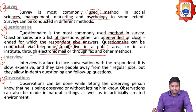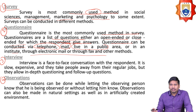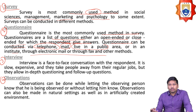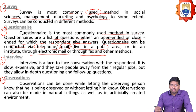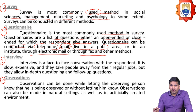Observations are also a primary data method, which can be conducted through experiments. This can be done by letting the observed person know they are being observed, or without letting them know. Observations can be made in several settings as well as artificially created environments.